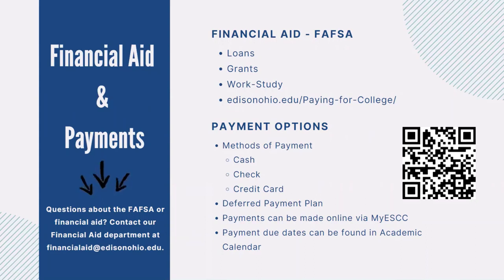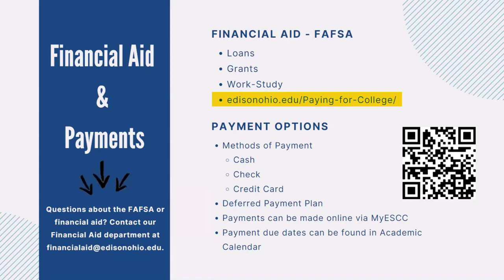More than 61% of students attending Edison State receive some form of financial aid, including loans, grants, scholarships, and/or part-time work-study employment. Completing the Free Application for Federal Student Aid — also known as the FAFSA — is your first step in applying for federal student aid. The FAFSA is available to all students on October 1st of each year and must be submitted annually. If you have questions, contact our financial aid department at financialaid@edisonohio.edu or visit edisonohio.edu/paying-for-college.